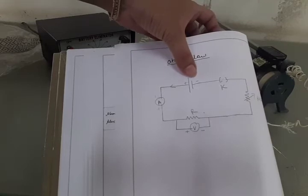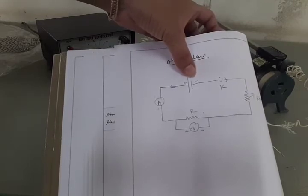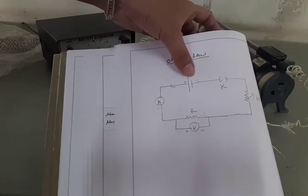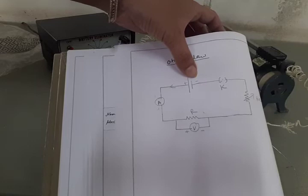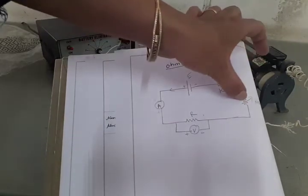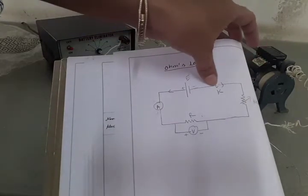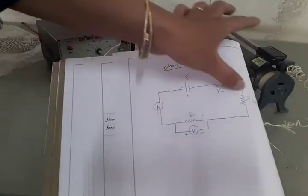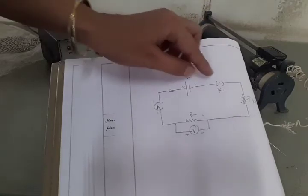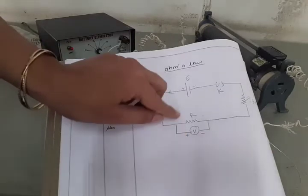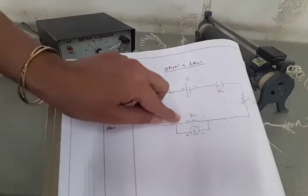In this Ohm's law circuit we will be using V equals IR formula between the voltmeter reading and ammeter reading. So we need a supply of current means battery, one ammeter, one resistance wire, rheostat, and key. Now all these circuit components are connected in series one after another. Their sequence can change here and there. Only this voltmeter should be connected always in parallel with the resistance.